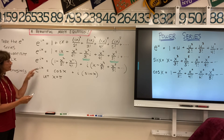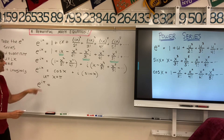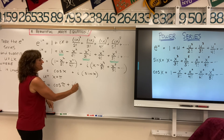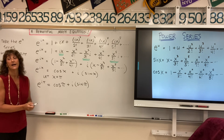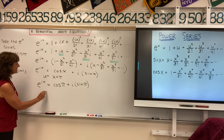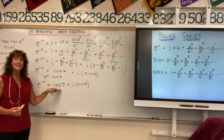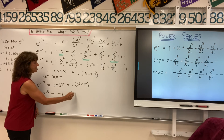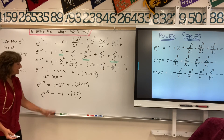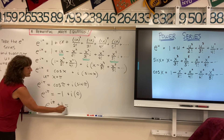When we plug in pi, we replace all the x's with pi. The left side becomes e to the i pi. On the right side, we have cosine of pi plus i times sine of pi. The cosine of pi — the x-coordinate at pi radians on the unit circle — is negative 1. The sine of pi — the y-coordinate at pi on the unit circle — is 0. So we have e to the i pi equals negative 1 plus i times 0, which is just negative 1. Adding 1 to both sides: e to the i pi plus 1 equals 0.